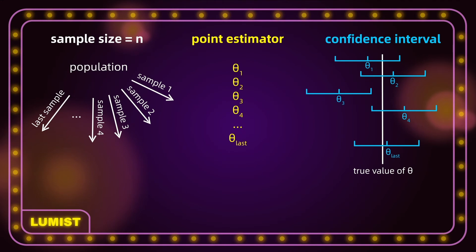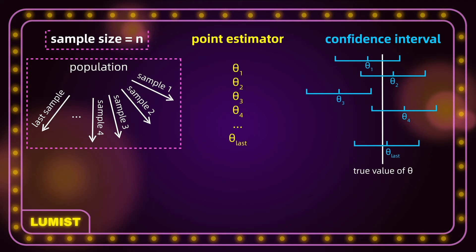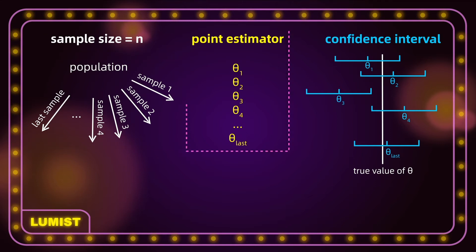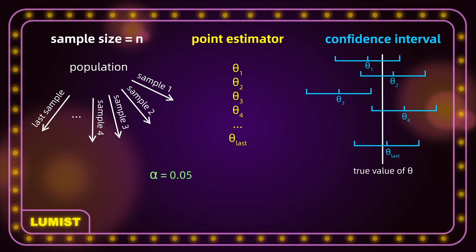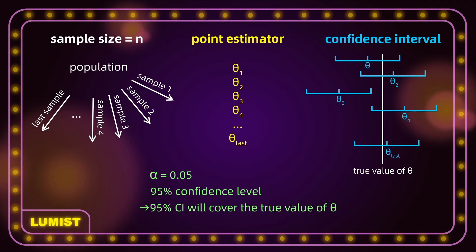So how can we understand this confidence level better? Suppose all possible samples were selected from the same population — sample 1, 2, 3, 4, all the way to the last sample, each with sample size n. Each sample has a point estimator and a calculated confidence interval. If we take alpha equal to 0.05, then the confidence level is 95% — meaning we have a 95% confidence interval. This implies that 95% of the confidence intervals would include the true population parameter.